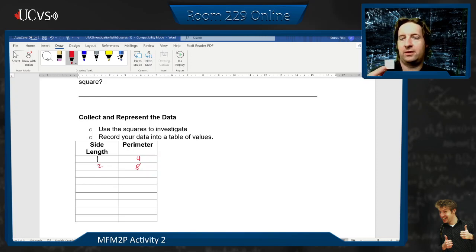What about three? Three, six, nine, twelve. So three is twelve. Anyone see a pattern yet? Four, sixteen, five, twenty. Okay, so let's just go with that data for now.